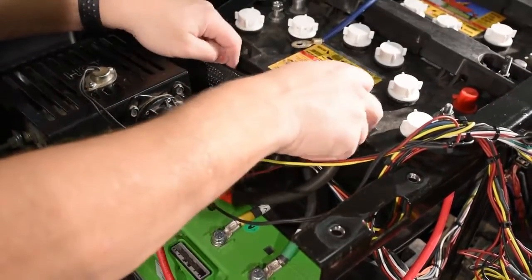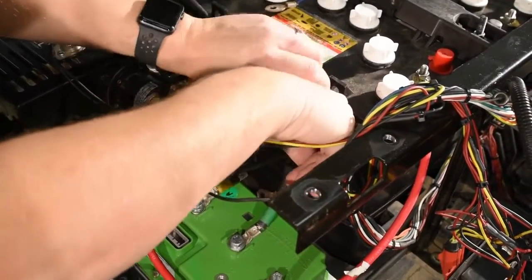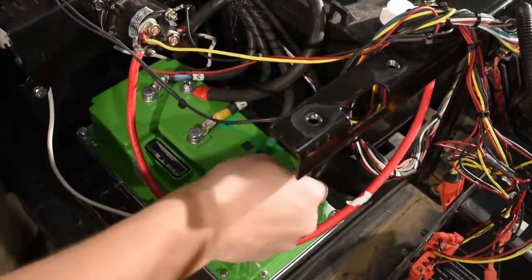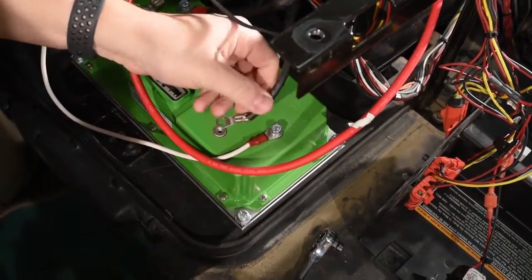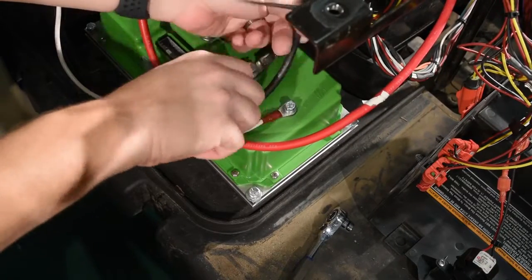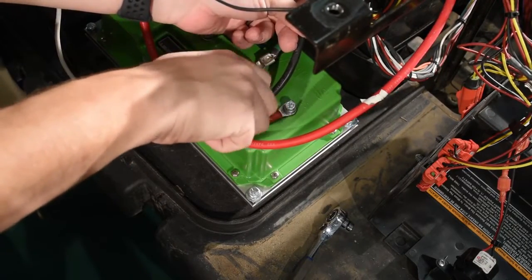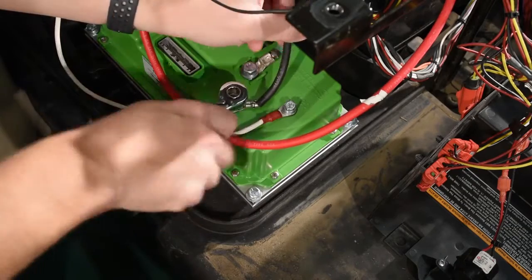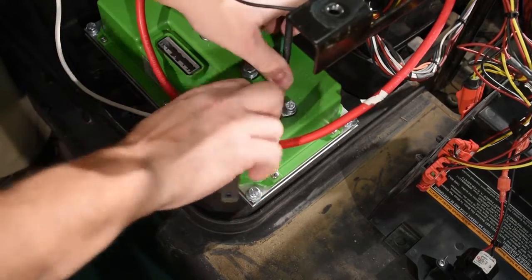Finally, connect the battery negative cable and tighten it down with the 10mm socket or wrench.